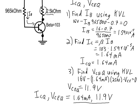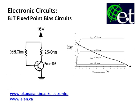Going back to the load line diagram, IC of 1.64 milliamps and VCEQ of 11.9 volts place our operating point on the load line. That's a fixed point bias circuit. There are more videos on bias circuits to come, and hopefully you learned a little about BJT circuits. See you in the next video.